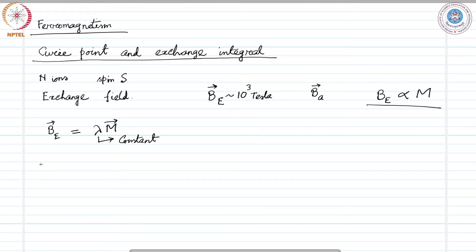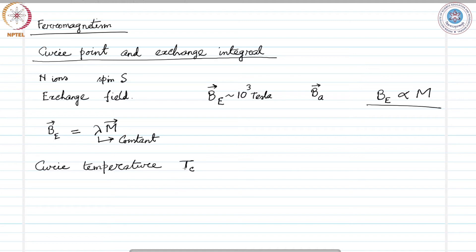Now we introduce the Curie temperature, symbolized as T_C. This is the temperature above which the spontaneous magnetization vanishes. It separates the disordered paramagnetic phase from the ordered ferromagnetic phase.